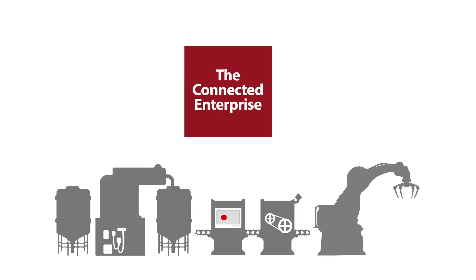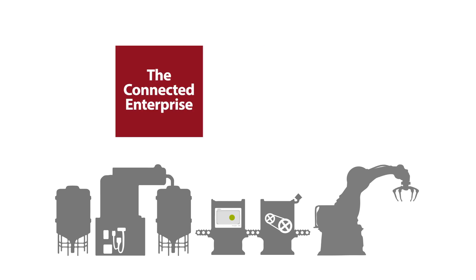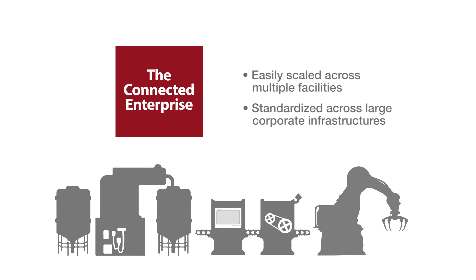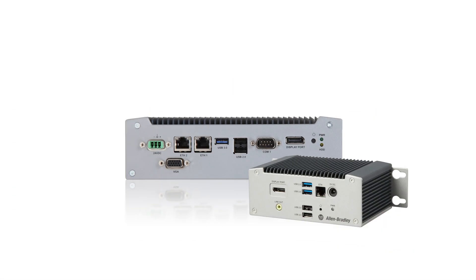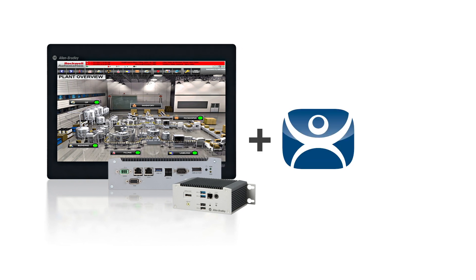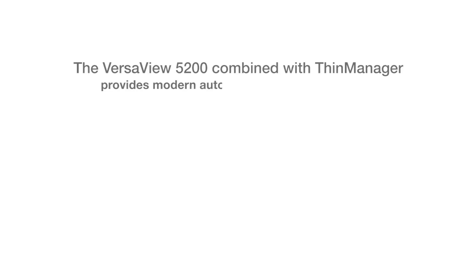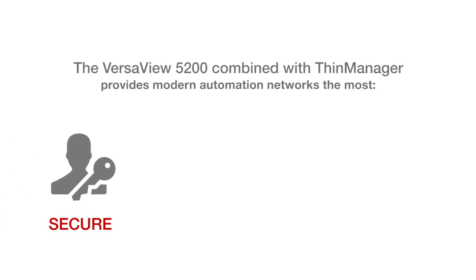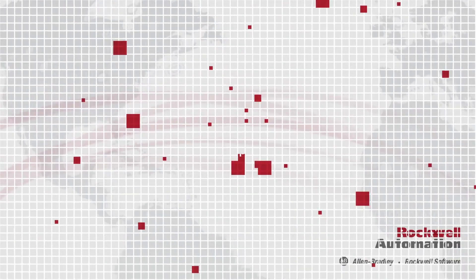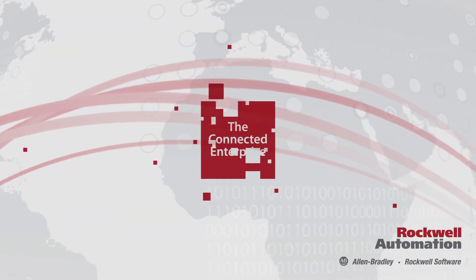The modern connected enterprise begins with foundational technologies that can be easily scaled across multiple facilities and standardized across large corporate infrastructures. The new VersaView 5200 thin clients combined with ThinManager provides modern automation networks with the most secure, scalable and cost-effective way to bring the connected enterprise to life for your modern manufacturing facilities.